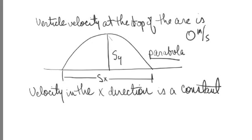The distance from the ground to the top of the parabola, the top of the arc, is S sub y. The distance from the beginning where the object leaves the ground to where it lands is called S sub x, also known as the range, or how far downrange it goes. At the top of the arc, the velocity in the vertical direction is zero — the object goes up, acted upon by gravity, slows down, and its velocity reaches zero at the top. Lastly, the velocity in the x direction is a constant.